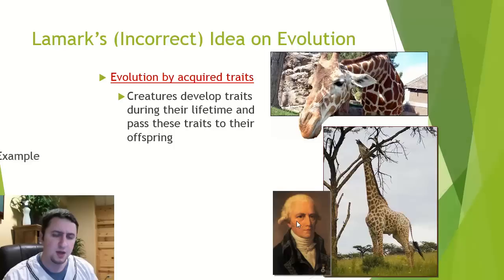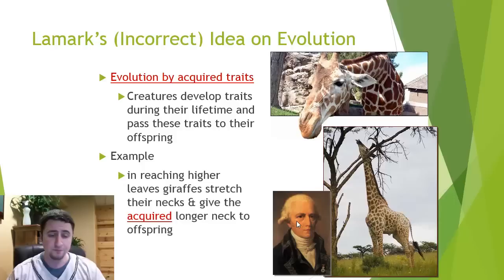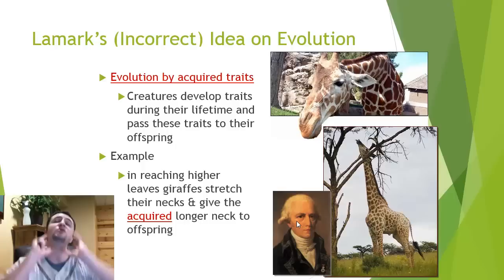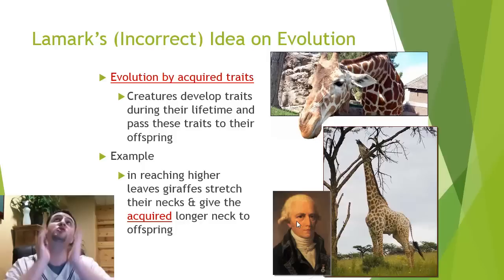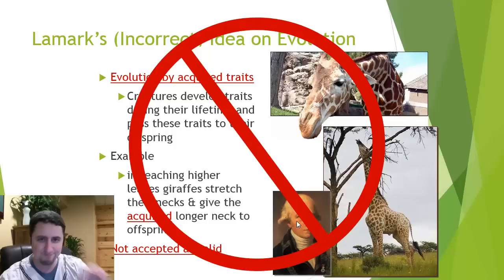There are many different theories on how the giraffe got its long neck, but according to Lamarck, those giraffes had a desire to reach taller leaves. So over their lifetime they stretched their neck, kept stretching it, and over time the neck became longer and longer. Eventually they would have babies, and their babies would be born with longer necks because the parents stretched them out in their lifetime. We don't accept this as a valid theory.